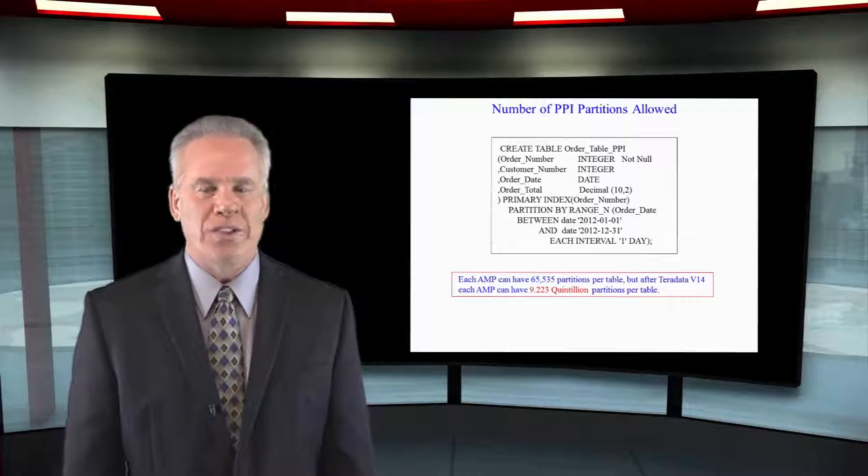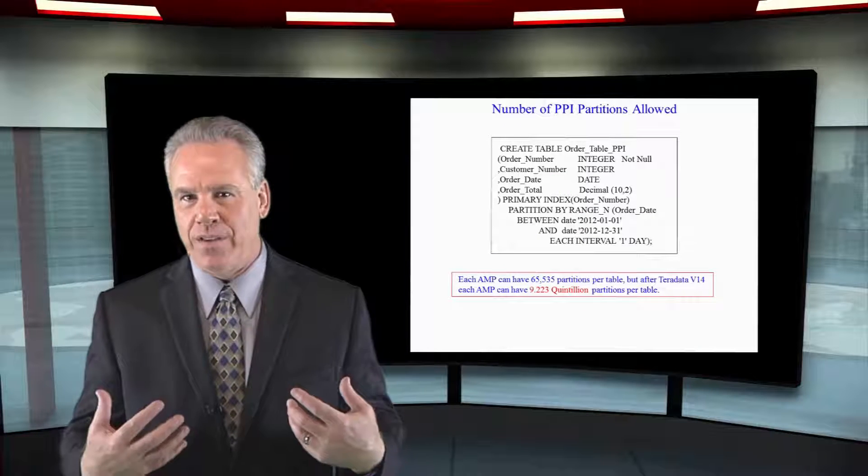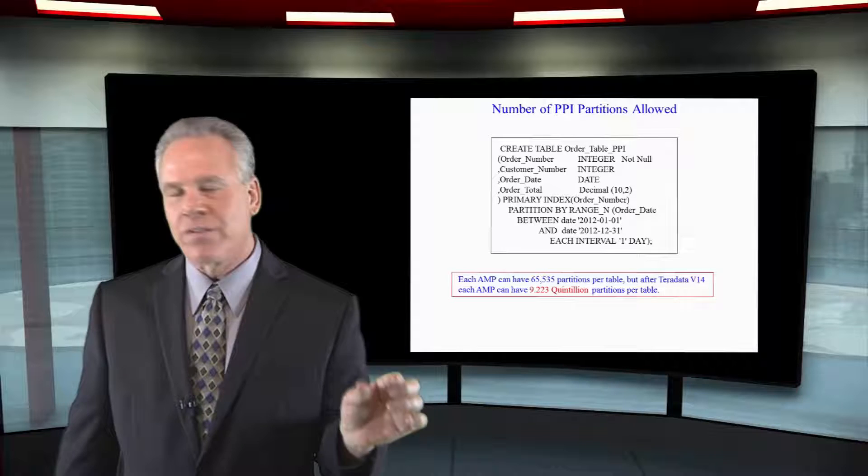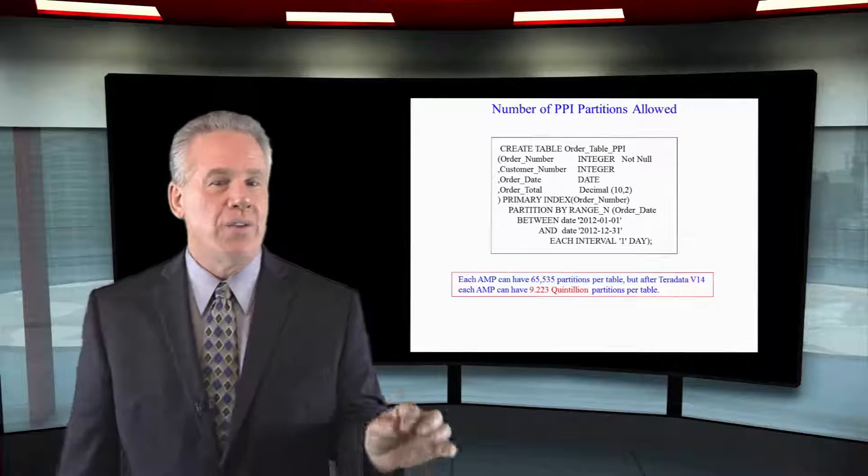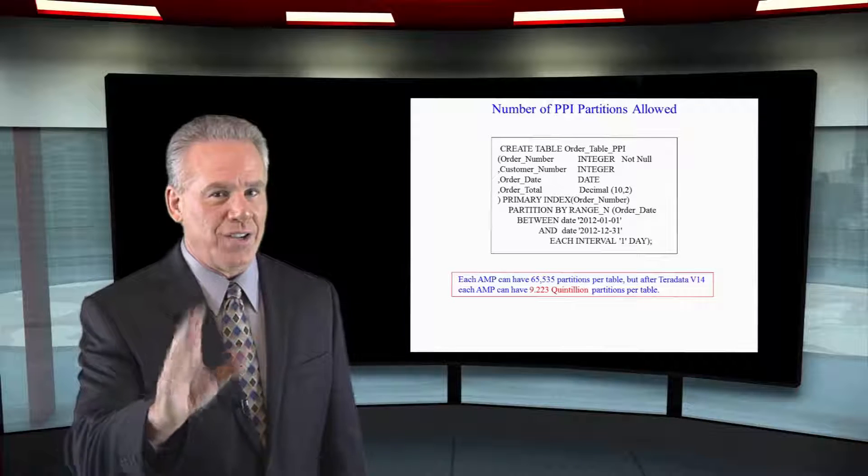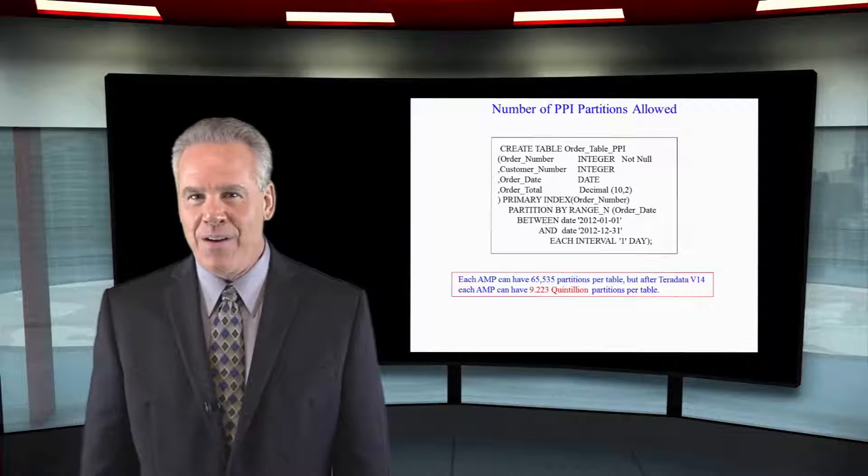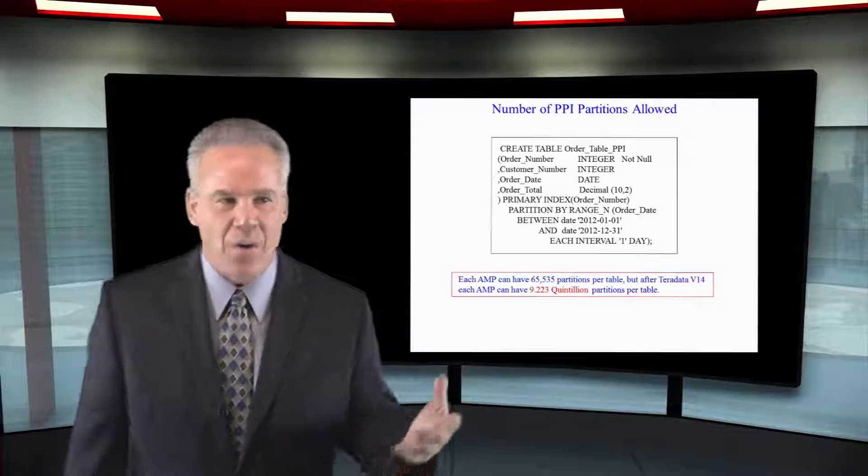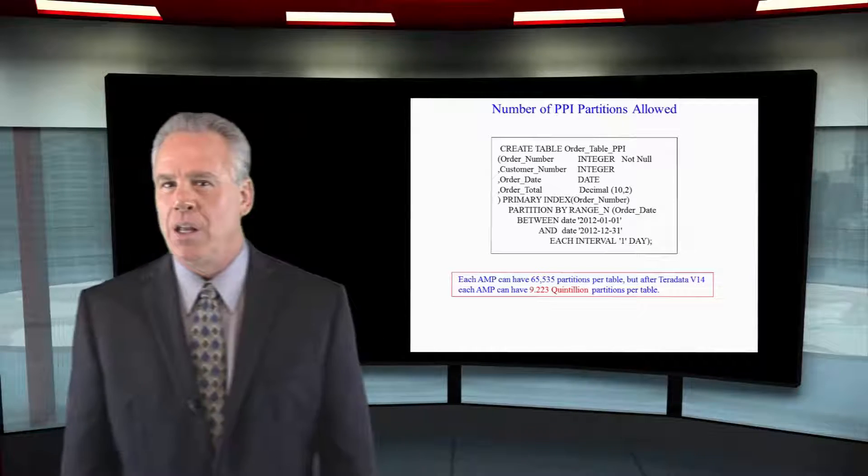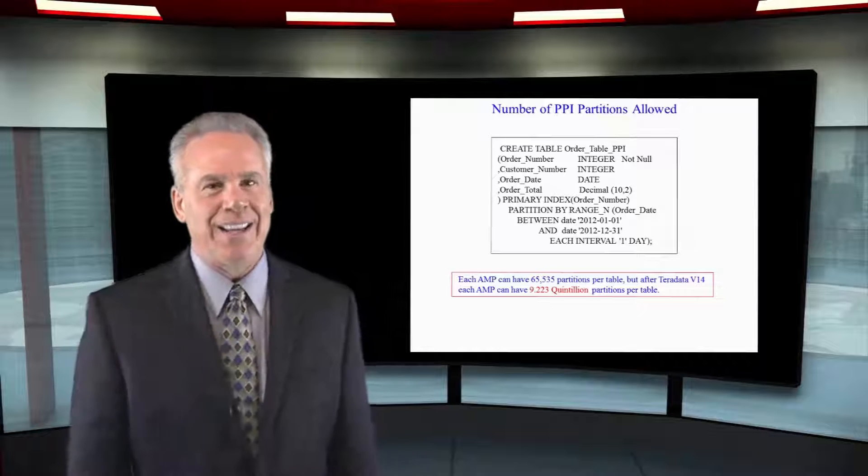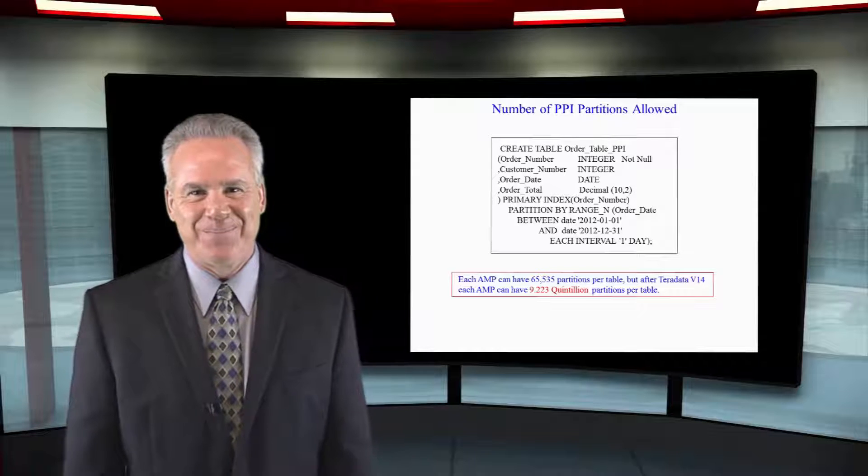In previous versions of Teradata, when they first came out with this, they put two bytes in front of every row and they said you can have 65,535 partitions on each AMP. But now, people have actually gone more than that, so I think it's like 9.2 quintillion. What does that mean? Seems like a lot.